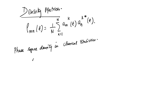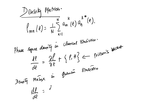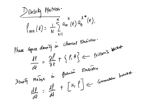The equation of motion for the phase space density in classical statistics is d-rho/dt = del-rho/del-t plus the Poisson bracket of rho and H. For the density matrix in quantum statistics, we write a very similar equation: d-rho/dt equals del-rho/del-t plus the commutator bracket of H and rho. So what was a Poisson bracket in classical statistics is replaced by a commutator bracket in quantum statistics.